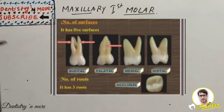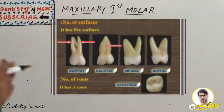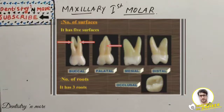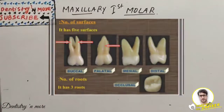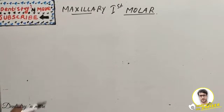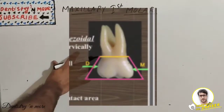The maxillary first molar has five surfaces and three roots. It is the only tooth which commonly has three roots, though sometimes the first premolar may also have three roots. We will start with the buccal aspect.